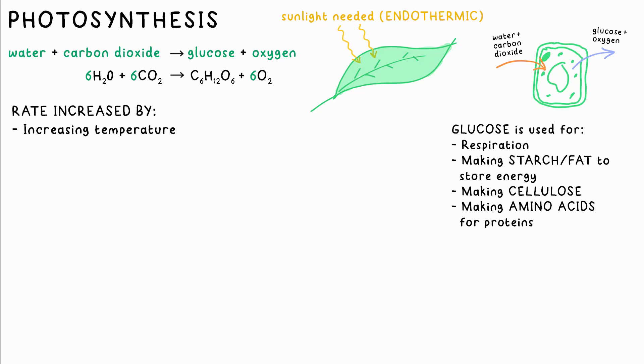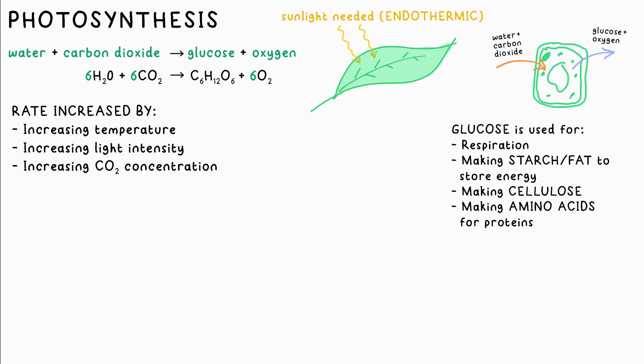The rate of photosynthesis increases with higher temperature, unless it's so high that enzyme denaturing occurs, increasing light intensity, or increasing CO2 concentration. Any one of these can be a limiting factor.